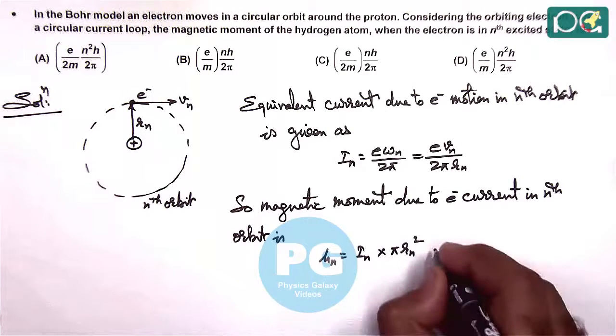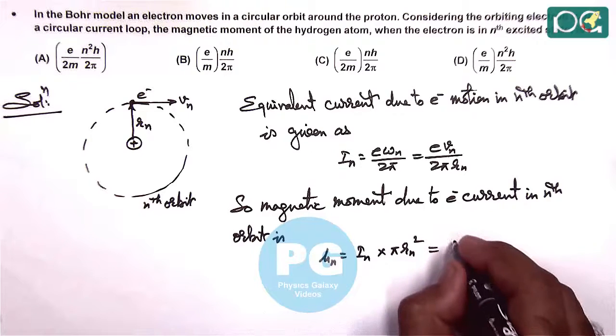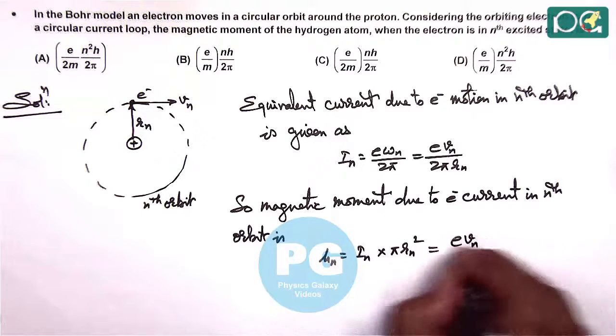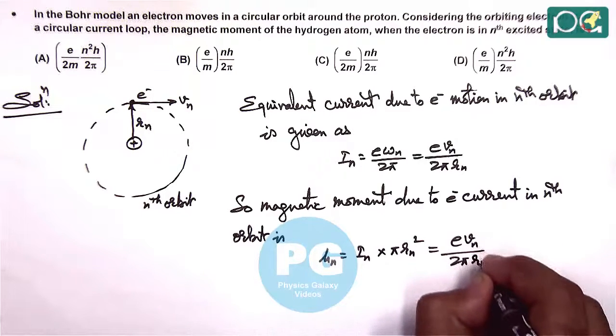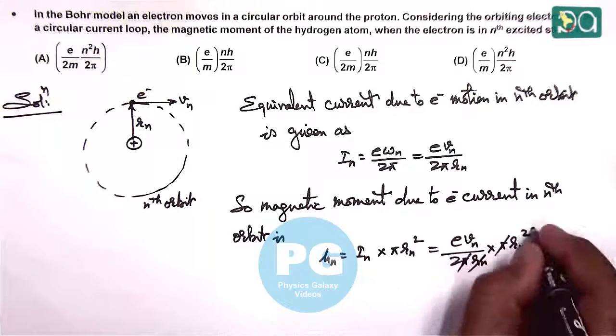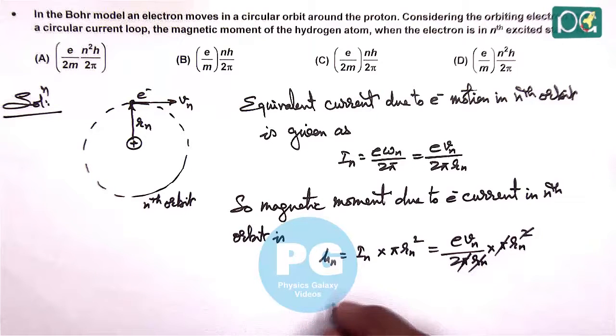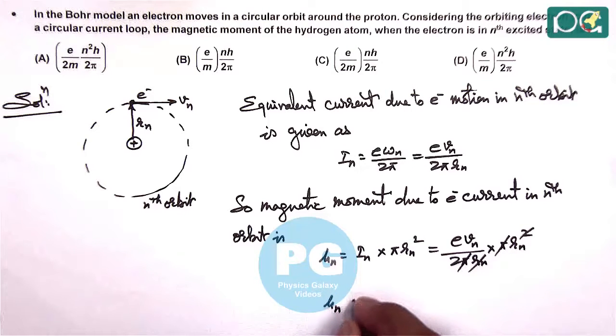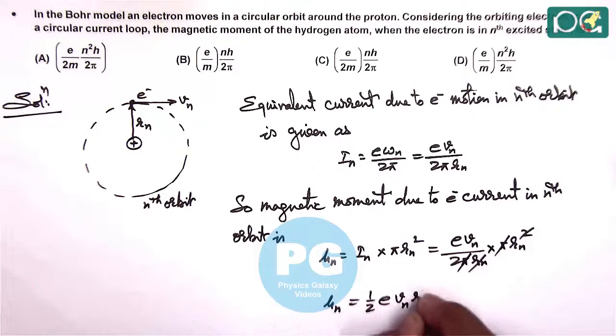Here in this case current multiplied by the cross sectional area or the area enclosed by the current we use. If we substitute the value of in, it gives e vn by 2π rn multiplied by π rn square where π gets cancelled out. rn also gets cancelled out, giving us magnetic moment of nth orbit is half e vn rn.